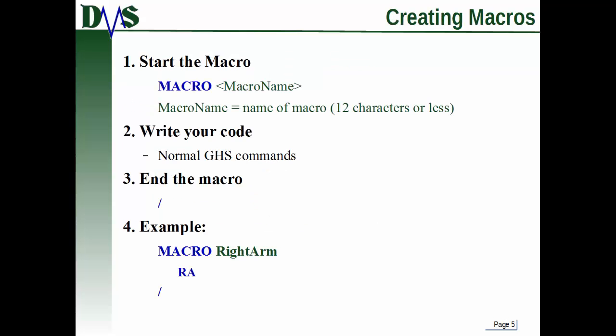So how do you create macros in GHS? You start with the keyword 'macro', and then right after that, whatever you want to call this particular macro. Your macro name has to be 12 characters or less. Then you write your code, and here's the critical part: you end the macro with a forward slash. As good programming practice, I will first create my beginning statement — 'macro' and the macro name — then immediately type my ending slash, and then insert any code in the middle. Always double check that you have your ending slash. GHS does not check for ending slashes, and if you don't have it, GHS is going to interpret your code very oddly — and it's a very hard error to track down.